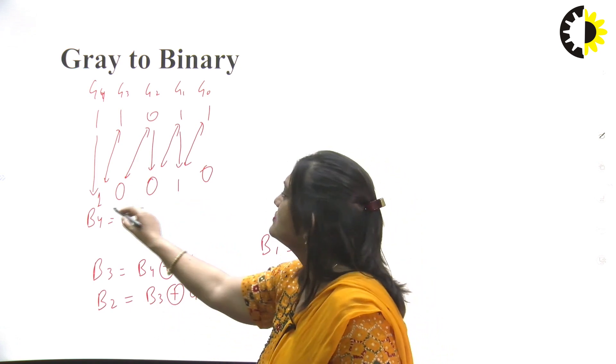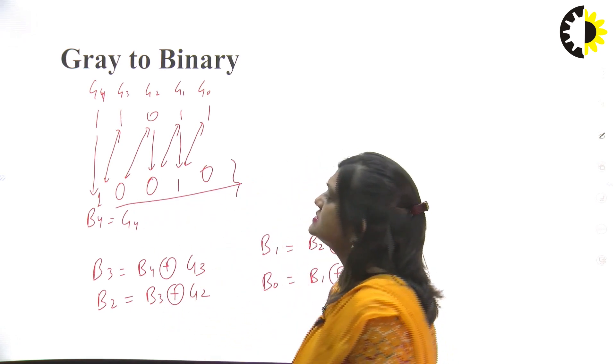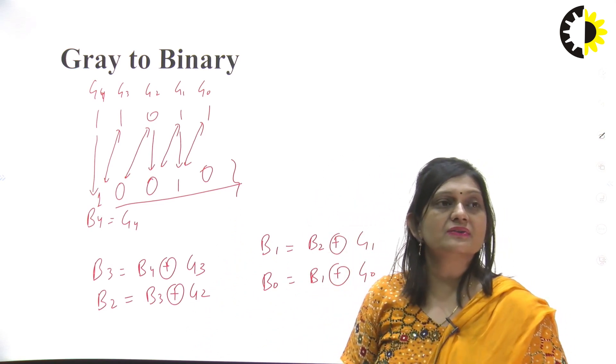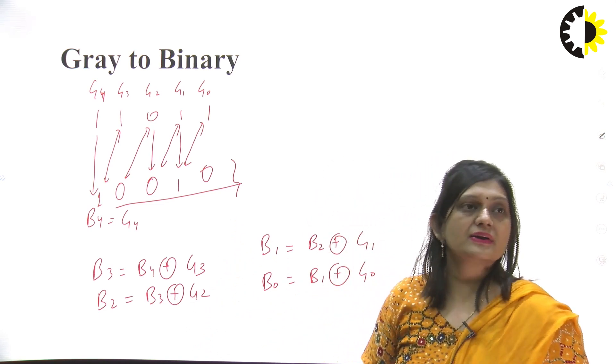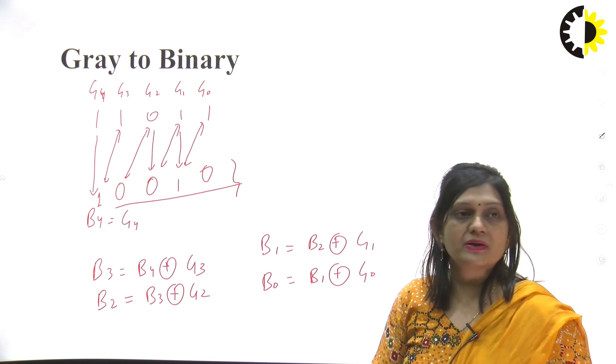The final answer is 10010. This is how we can convert a gray code number into a binary number.